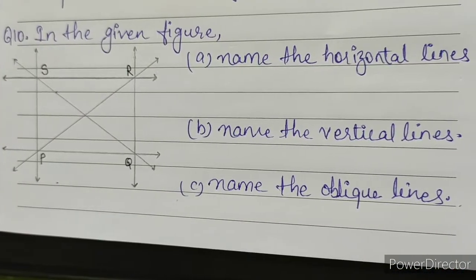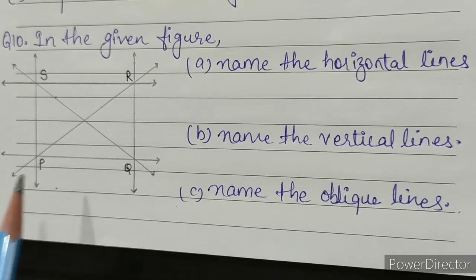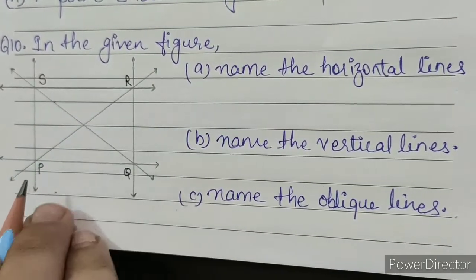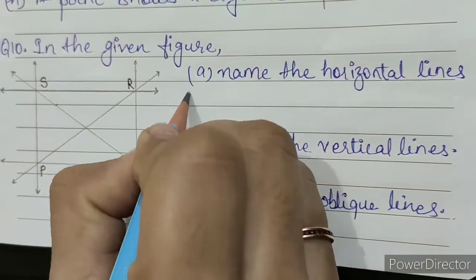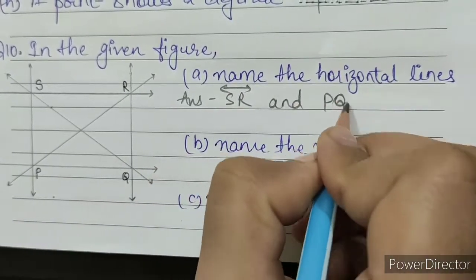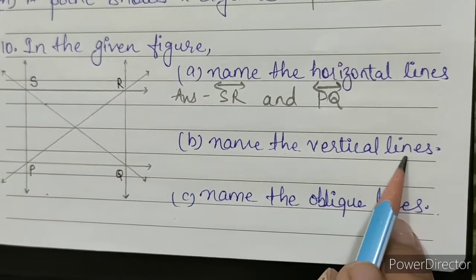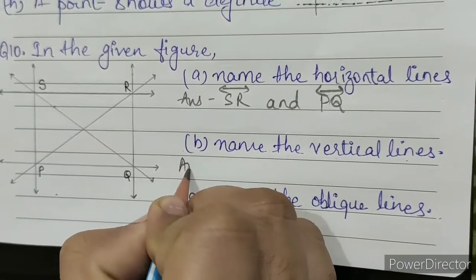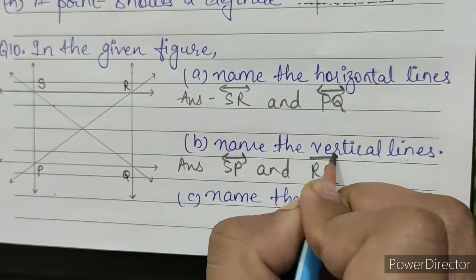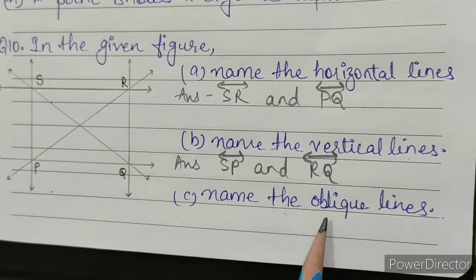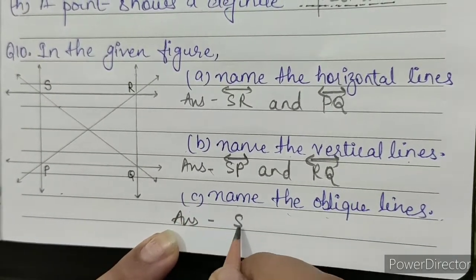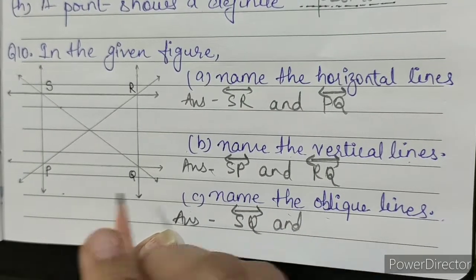Question number 10: in the given figure. A: name the horizontal lines — we can see SR and PQ are the horizontal lines, so our answer is SR and PQ. B: name the vertical lines — the vertical lines are SP and RQ. C: name the oblique lines — the oblique lines are SQ and PR.